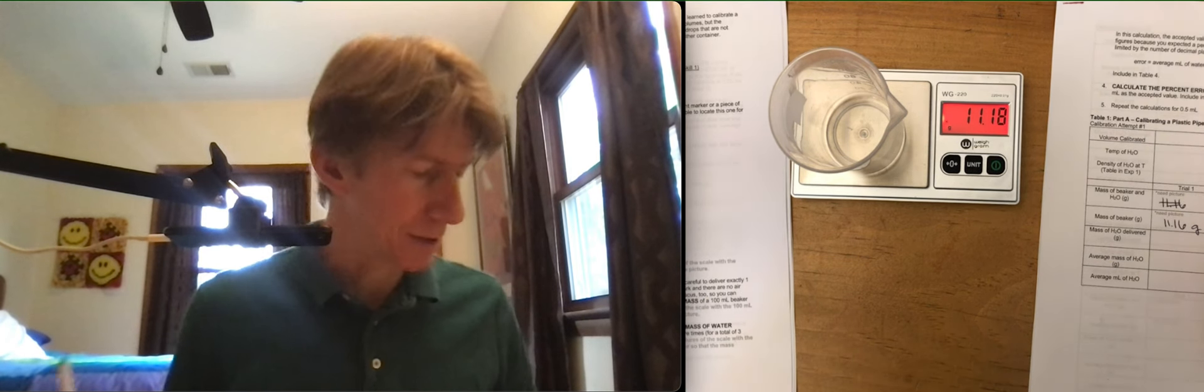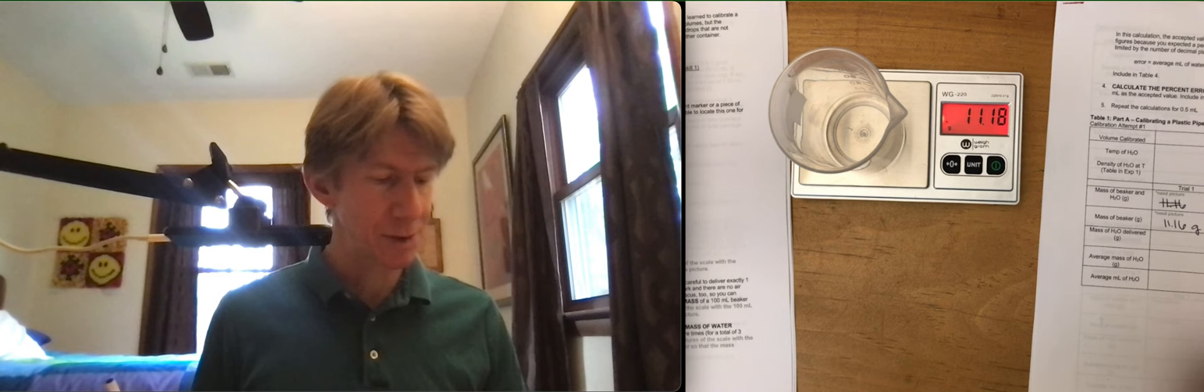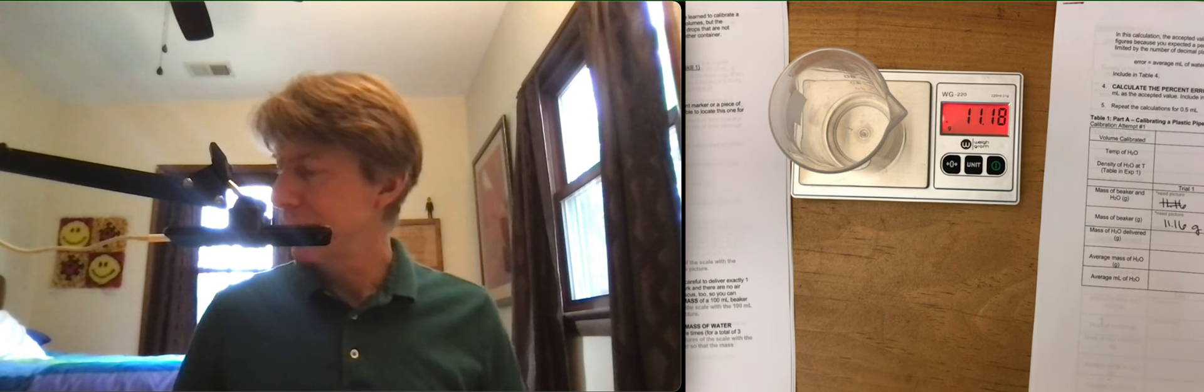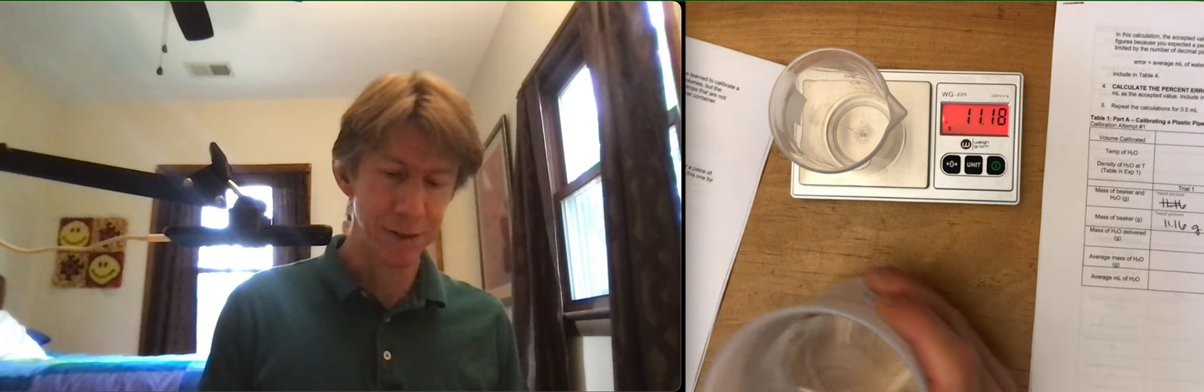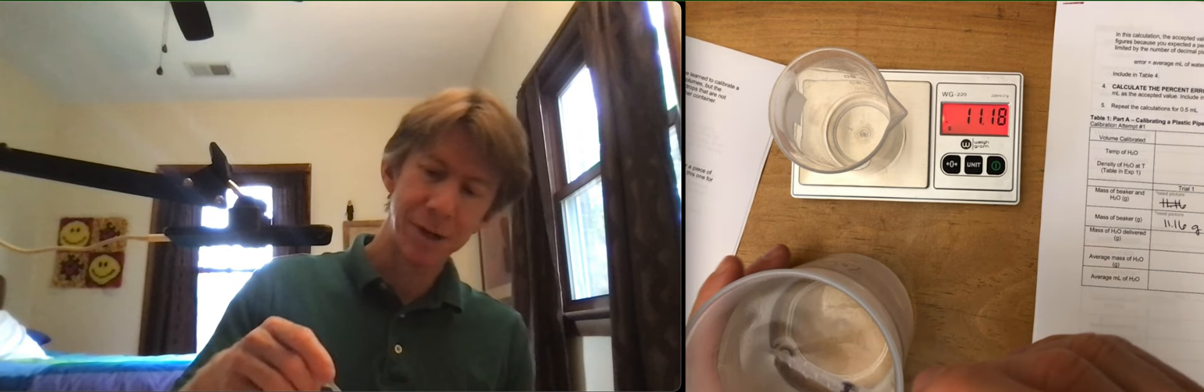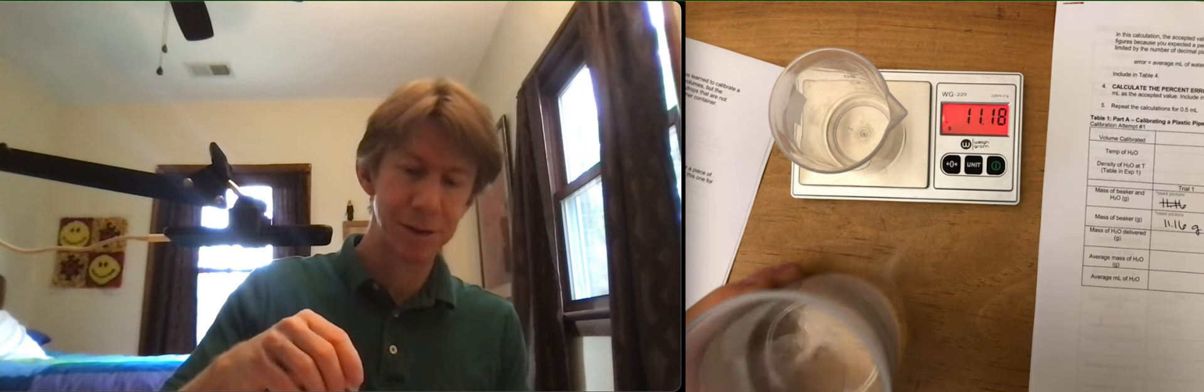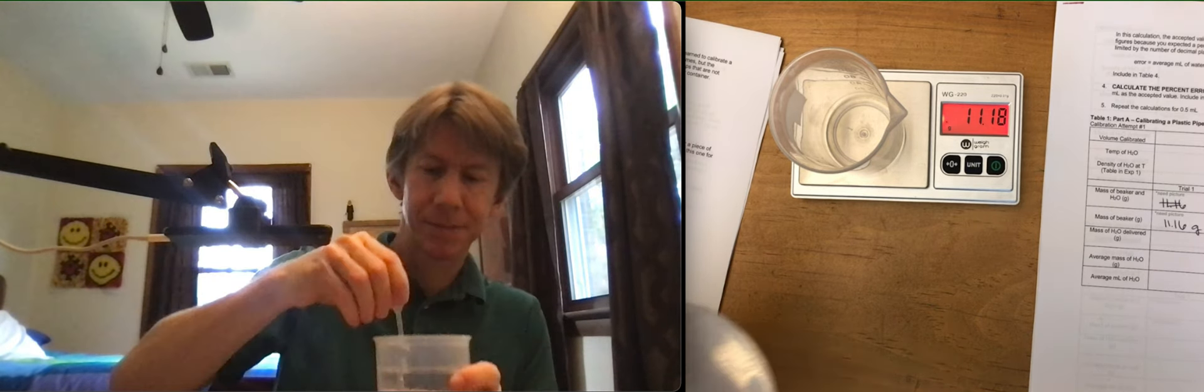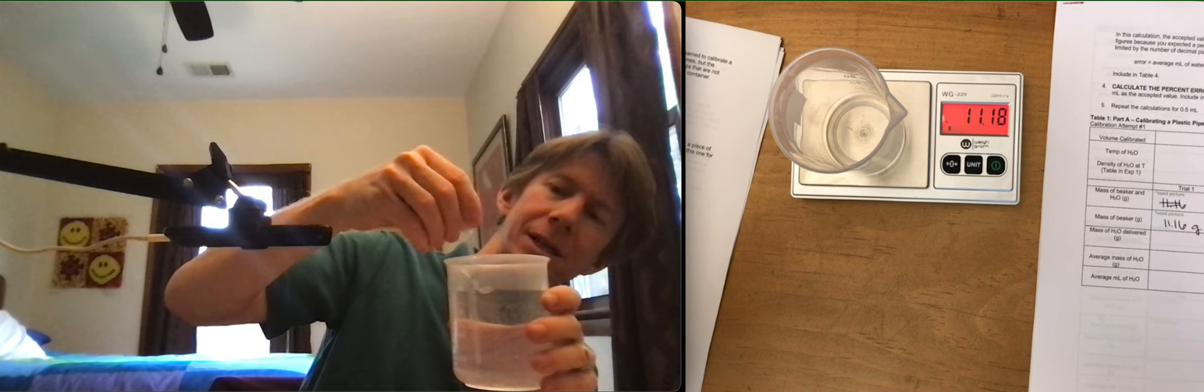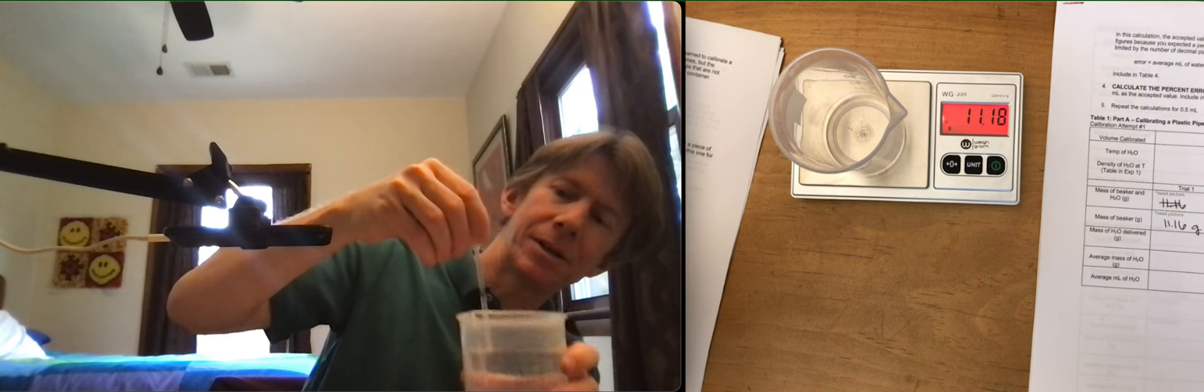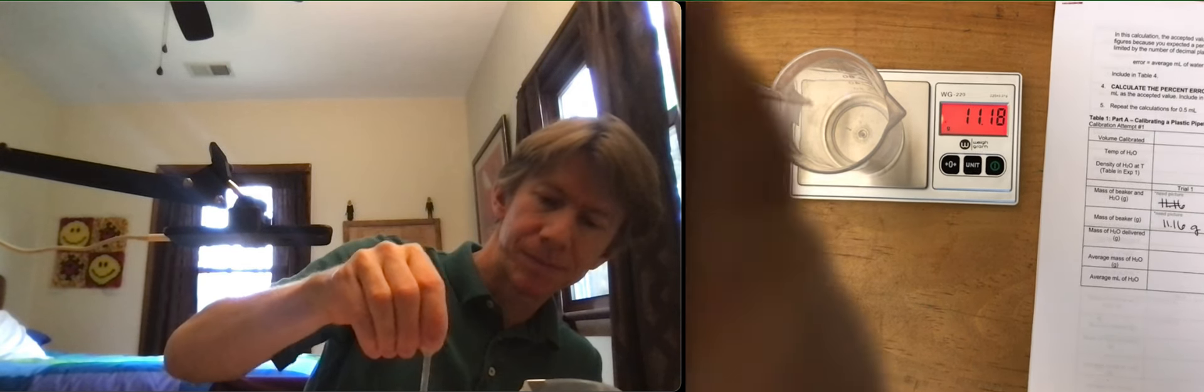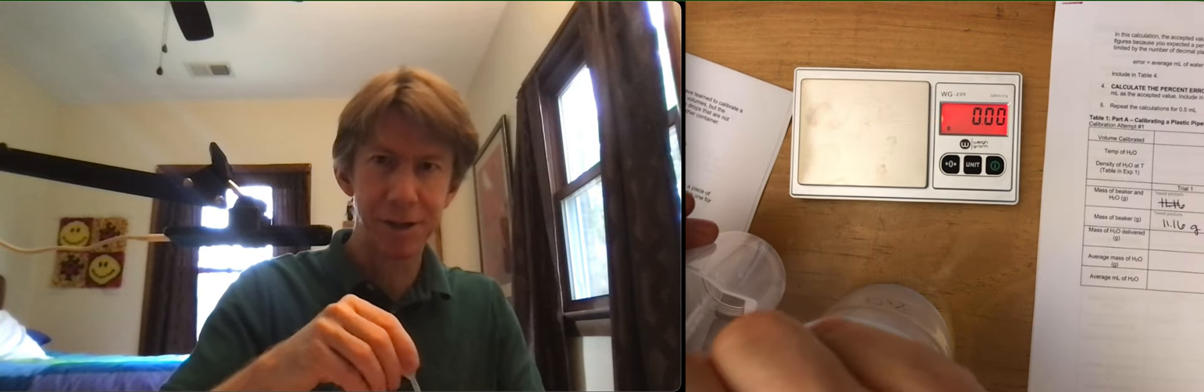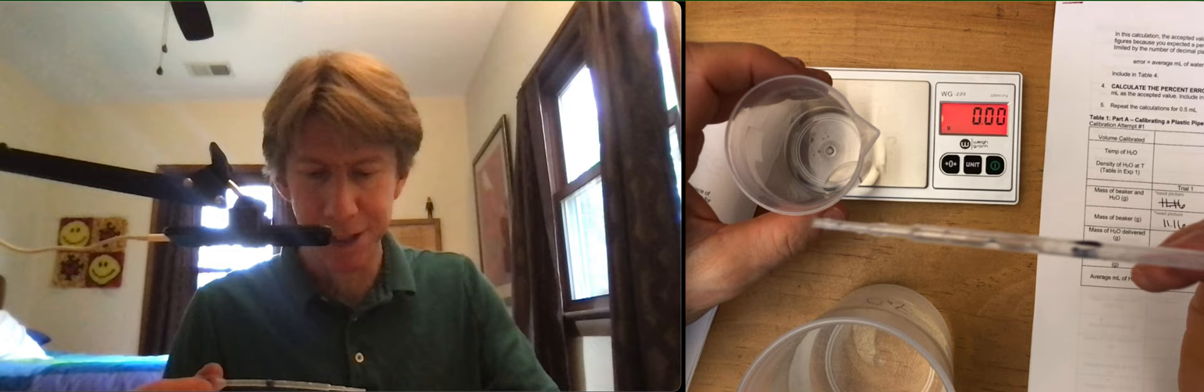Reading along. Deliver 1.00 milliliter using the pipette. Well, I hope this is it. If not, we'll have to do it again. For my pipette, I'm going right to the 1.00 milliliter line. And I'm trying to do this without getting in my camera's way. I should have taken it off my scale first. I apologize for that.